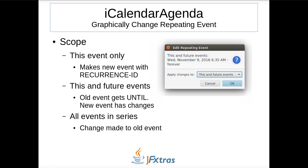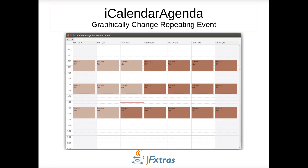If the recurrence belongs to a repeatable series, then the scope of the change needs to be specified. There are three options. First, the change can be applied to the selected recurrence only — a new calendar event is created with the same UID and a new recurrence ID property specifying the recurrence it's replacing, while the original event is unchanged. Second, the change can apply to this and future events by creating a new event starting on the selected recurrence, and adding an until property to the original event's RRule. Third, the change can be applied to all, which simply makes all changes to the original event.